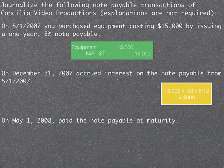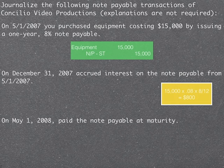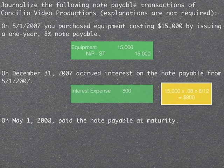Our principal is fifteen thousand dollars, our rate is eight percent, and since the rate is on a yearly basis we need to express time as a fraction of the year. We accrued interest starting May 1st, covering May, June, July, August, September, October, November, and December — that's eight out of twelve months. So fifteen thousand times eight percent times eight-twelfths gives us interest of eight hundred dollars that we need to accrue. We debit Interest Expense for eight hundred dollars, and because we're not paying it right now — deferring it for later — we credit Interest Payable for eight hundred dollars.